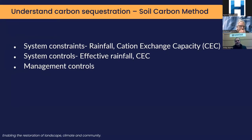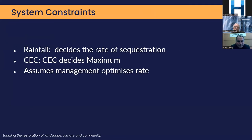It's important to understand that in regard to the soil carbon method, you have system constraints, system controls, and management controls. The system constraints are rainfall — rainfall decides the rate of carbon sequestration. You can't sequester more than the water available to grow plants. The second constraint is the maximum amount you can sequester, which is decided by the charge of the soil — the cation exchange capacity. And third, those two assume your management practices optimise the rate.